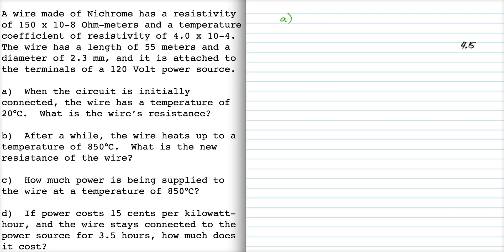Our formula for that from the formula sheet is R = ρL/A, where ρ is the resistivity, and that's given as 150 times 10 to the minus 8. The length of the wire L is given to be 55 meters.